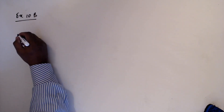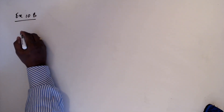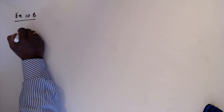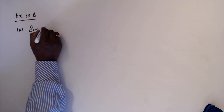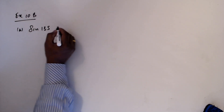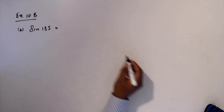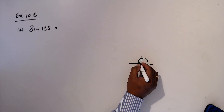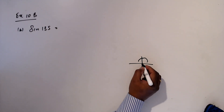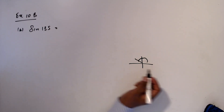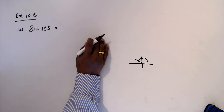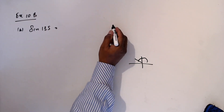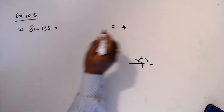Exercise 10b, question A: sine 135. Sine 135 is in the second quadrant. In the second quadrant, sine is positive, so the final answer should be positive.